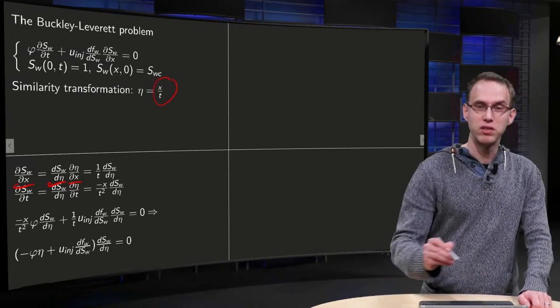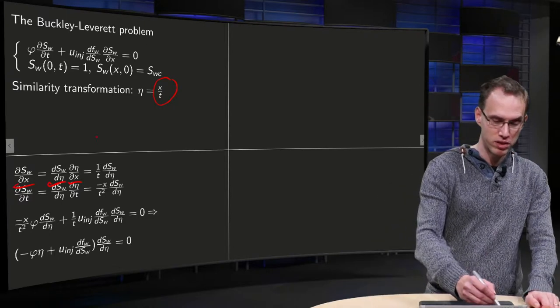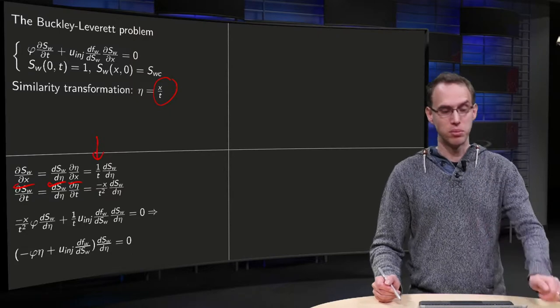While η equals x over t, the partial derivative of η with respect to x yields 1 over t. So ∂Sw/∂x becomes 1 over t times ∂Sw/∂η.